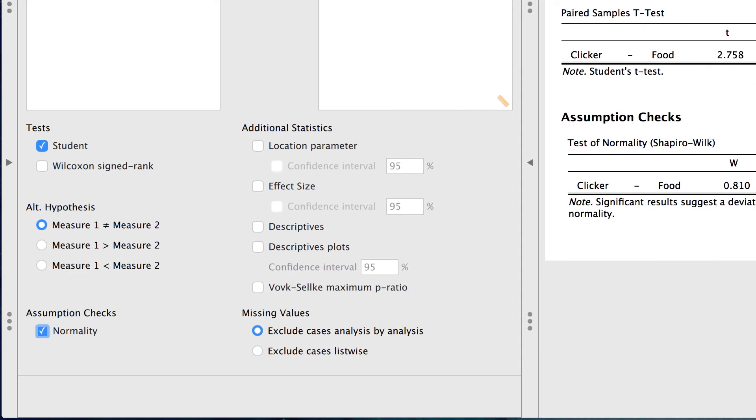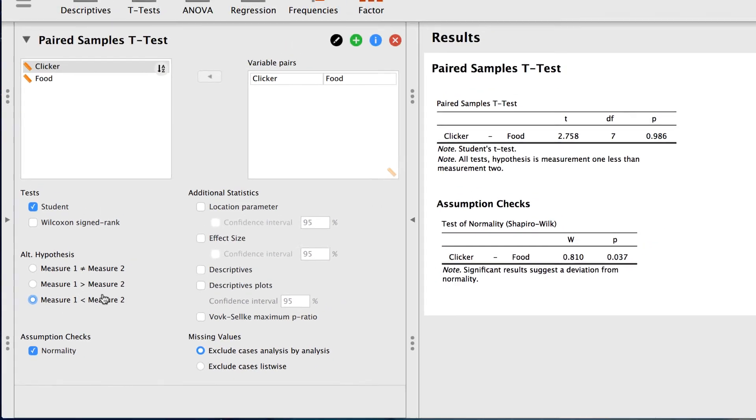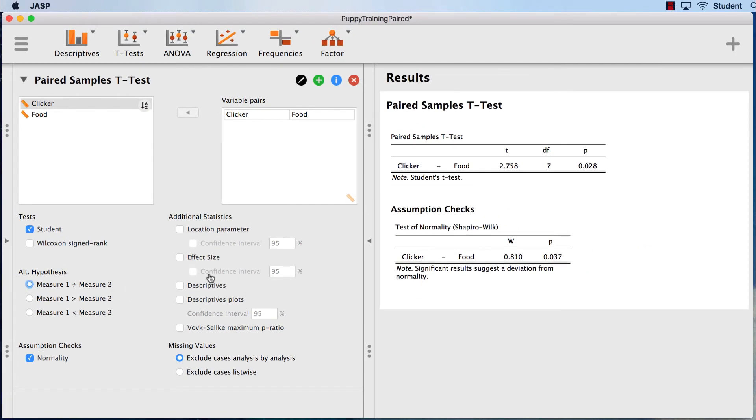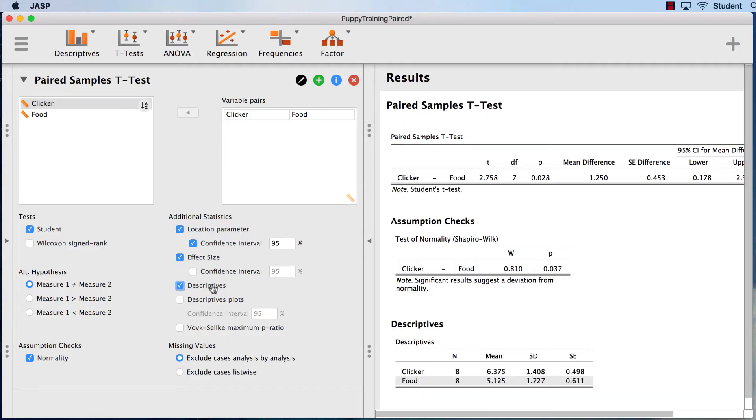You recall from step two that our alternative hypothesis is that the means of the two groups are not equal. We could also choose one-tailed test options here if we wanted to. Under additional statistics, I am going to get a location parameter with 95% confidence intervals. I want a Cohen's D effect size, descriptive statistics, and a descriptives plot.